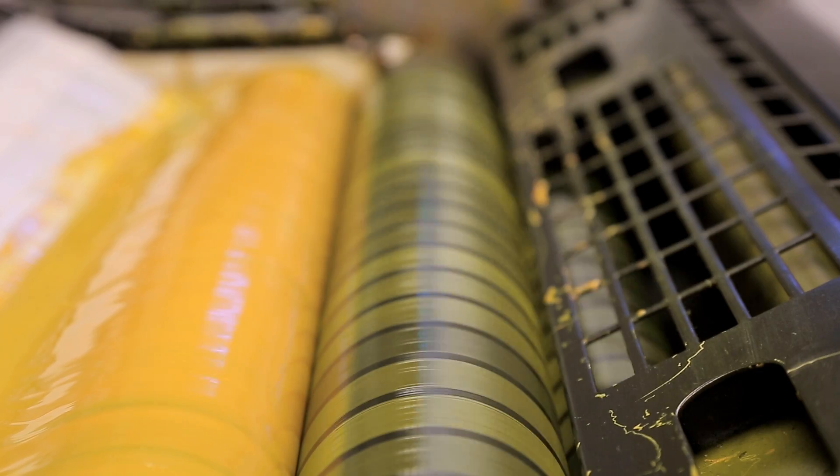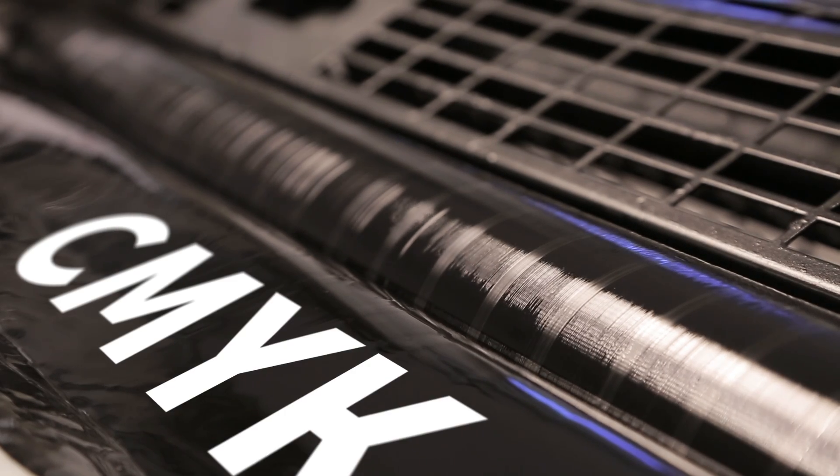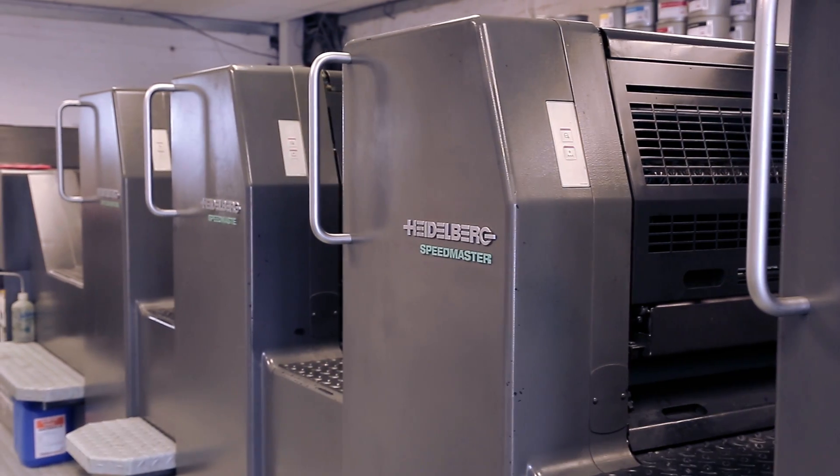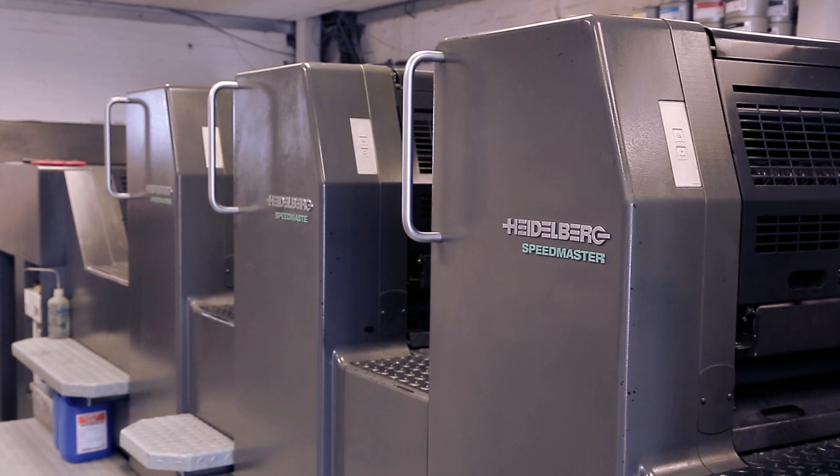Color printing typically uses ink of four colors: cyan, magenta, yellow, and black, the color model CMYK. For this job we will be using four of the printing units.